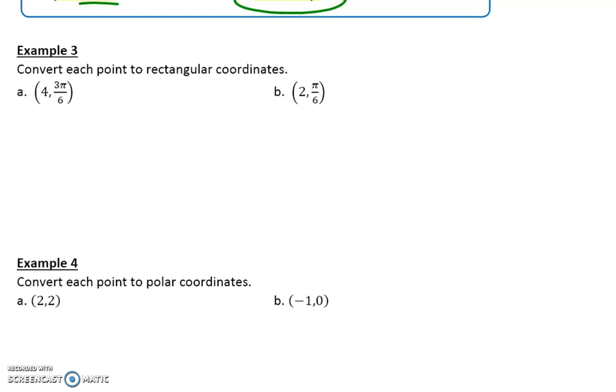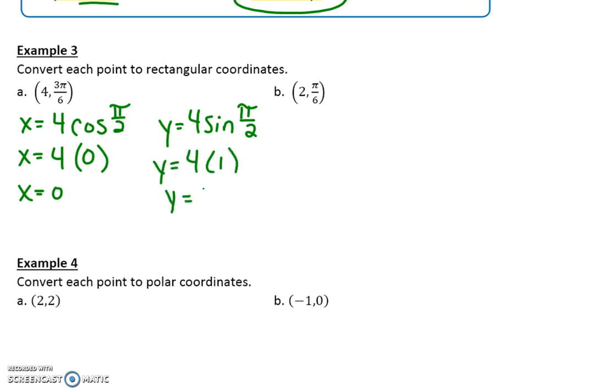So we want to convert each point to rectangular coordinates. So we're going from polar to rectangular. So your X is going to be your R value, which is 4, times the cosine of 3 pi over 6, which is the same thing as pi over 2. So if you want to simplify that, you are very welcome to. So you end up with 4. And then cosine of pi over 2, or 90 degrees, is just 0. So X is 0. And then when you do your Y, it's 4 times the sine of pi over 2. And remember that sine of pi over 2 is 1. So it's 4 times 1. So your Y value is 4. So your ordered pair is 0, 4.